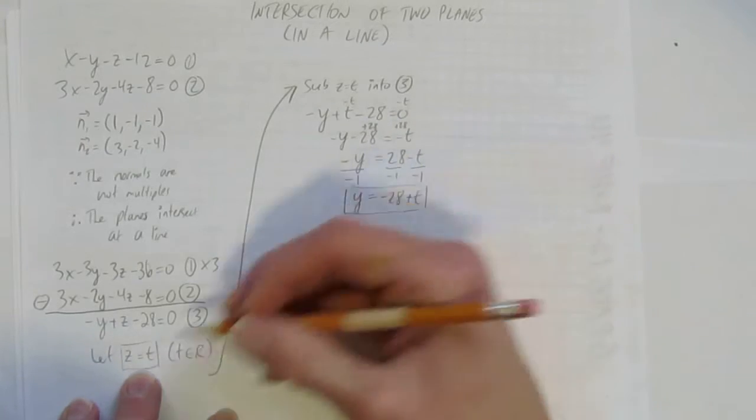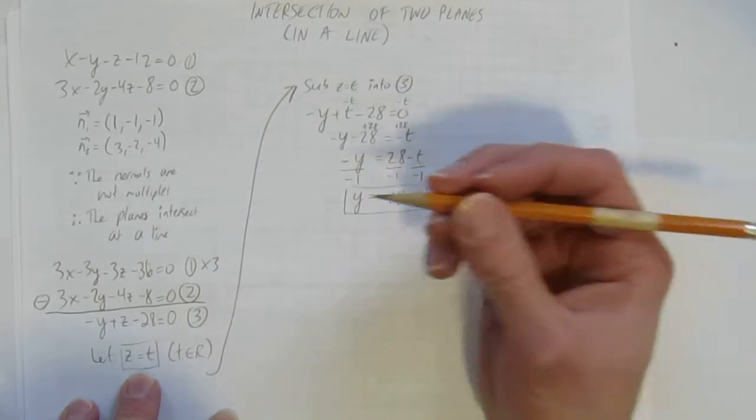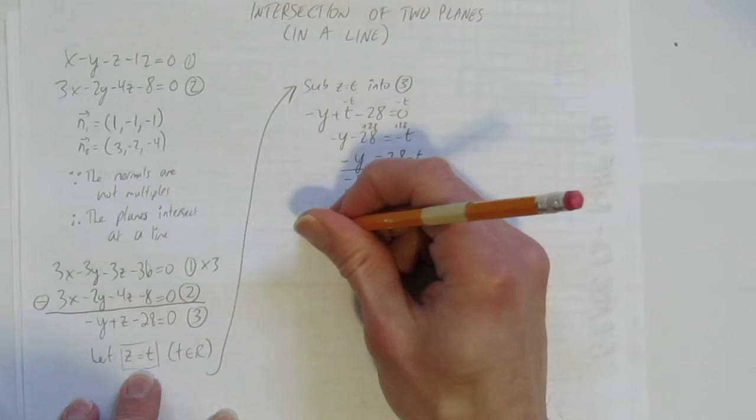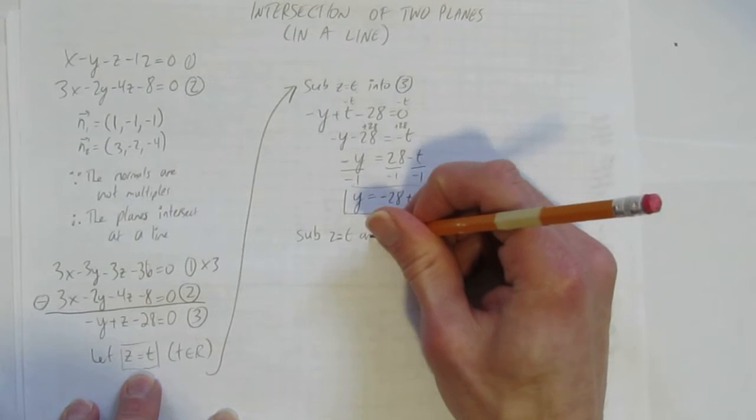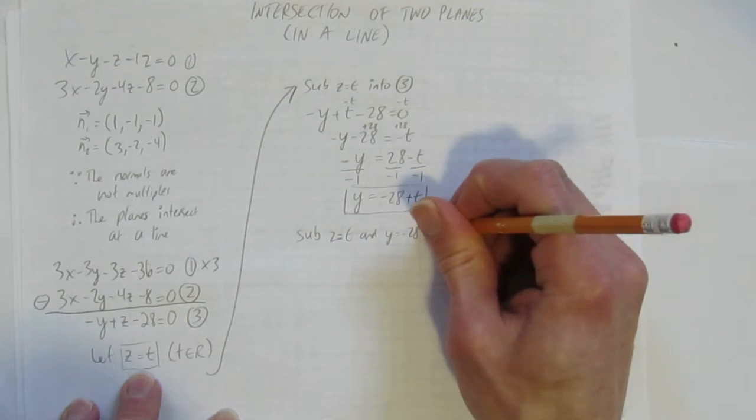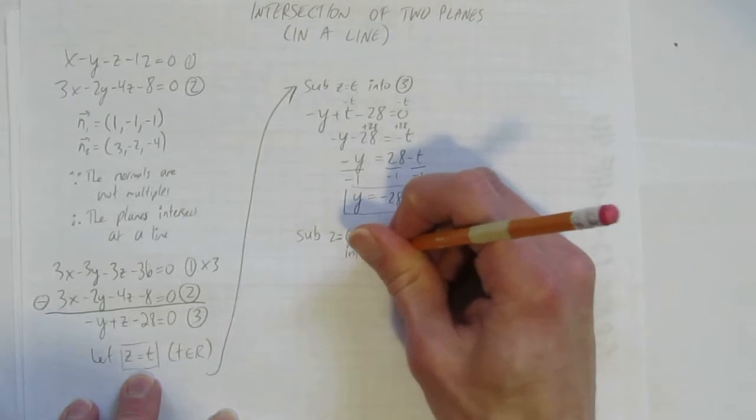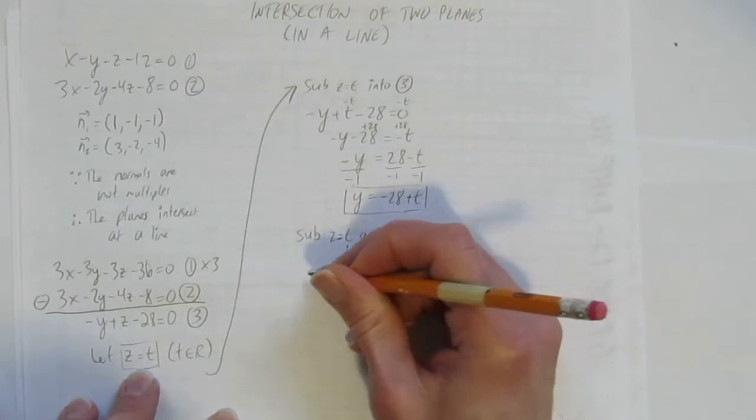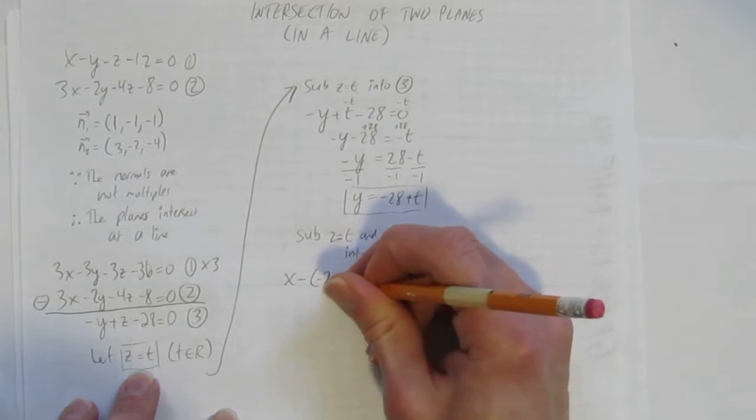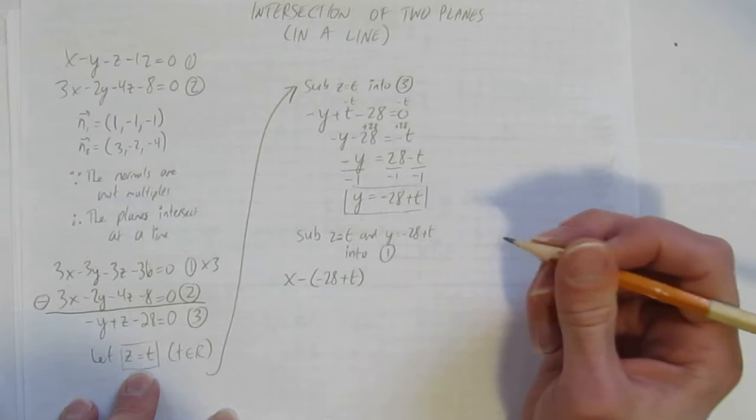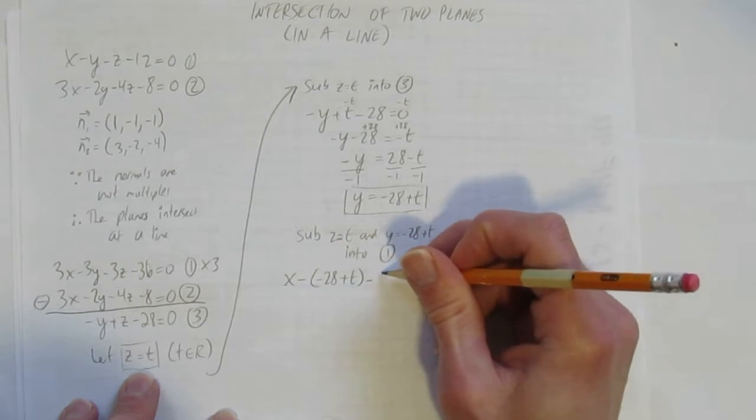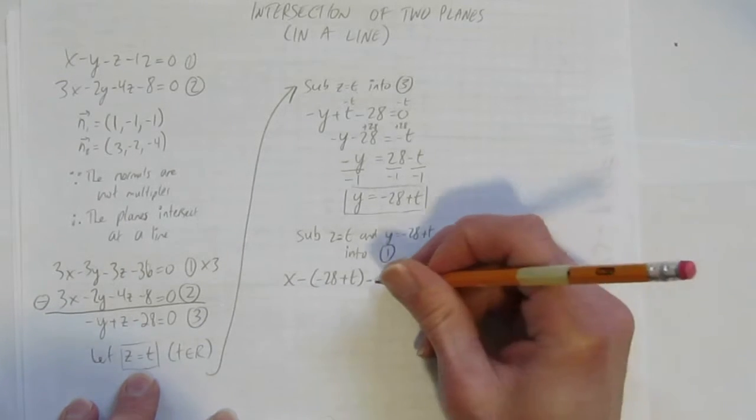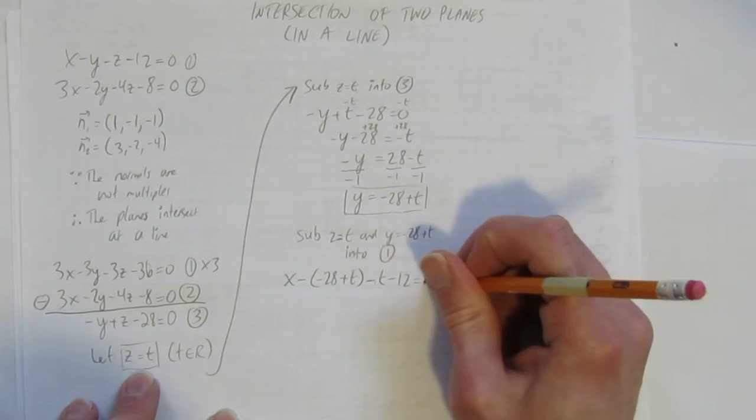I could sub in this y and z into either equation 1 or equation 2. But I'll take equation 1. It looks like it'll be easier to work with smaller coefficients. So sub z equals t and y equals negative 28 plus t into equation 1. And I'll solve for x. So I get x take away y. But I've got to take away all of negative 28 plus t. And then I have take away z. And z is just t. I could put brackets, but it's just a t. So I just take away t. Minus 12 equals 0.